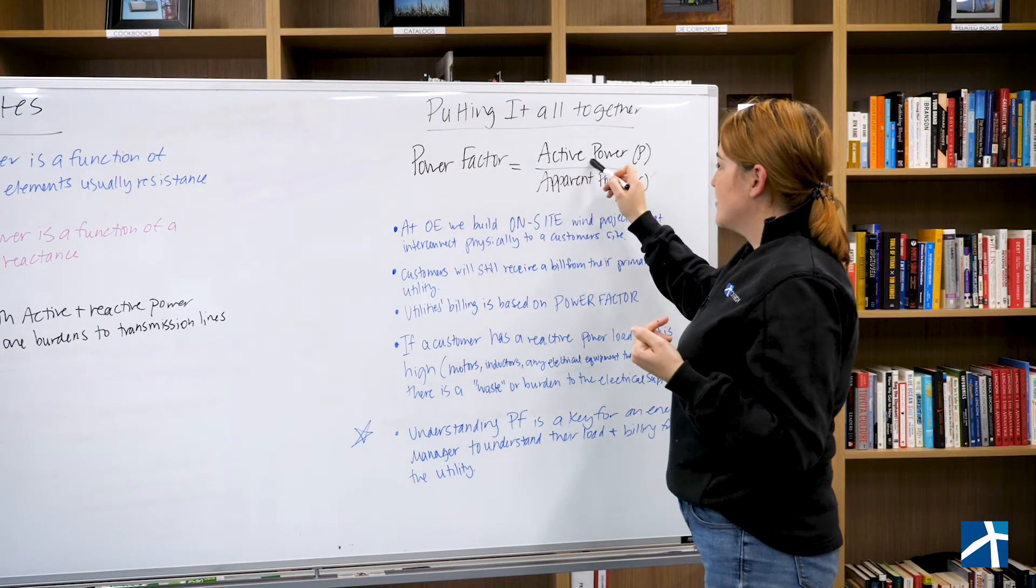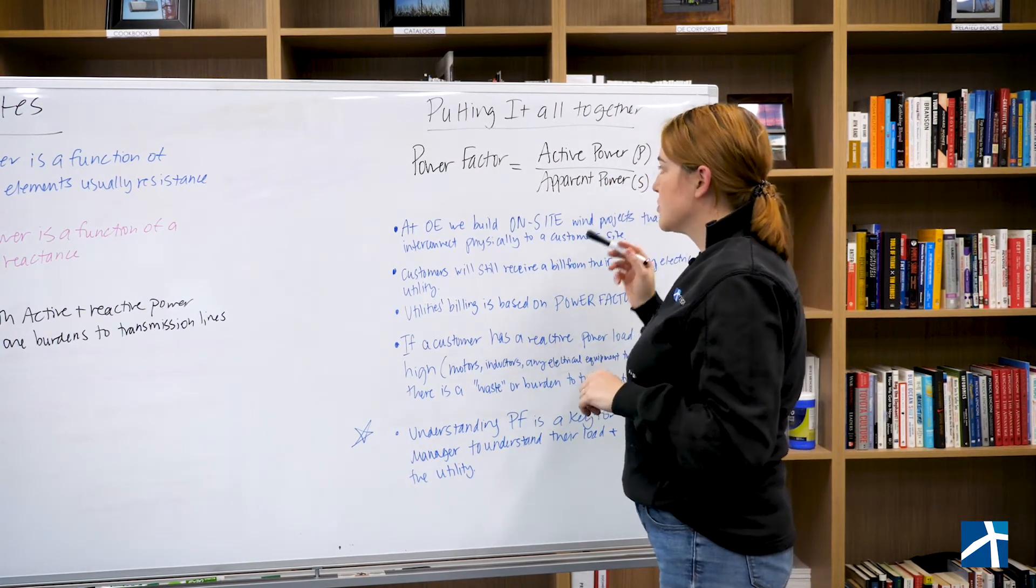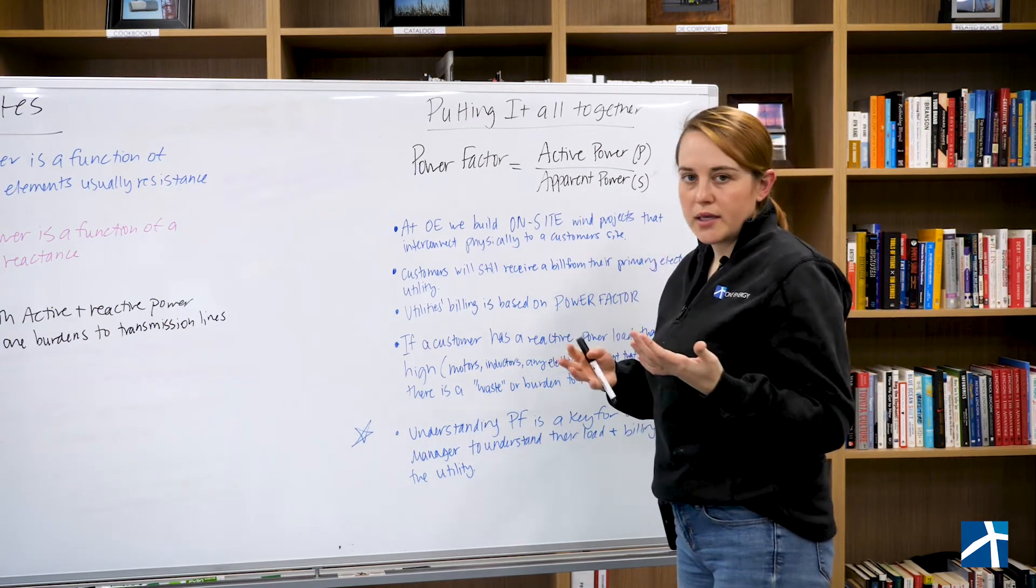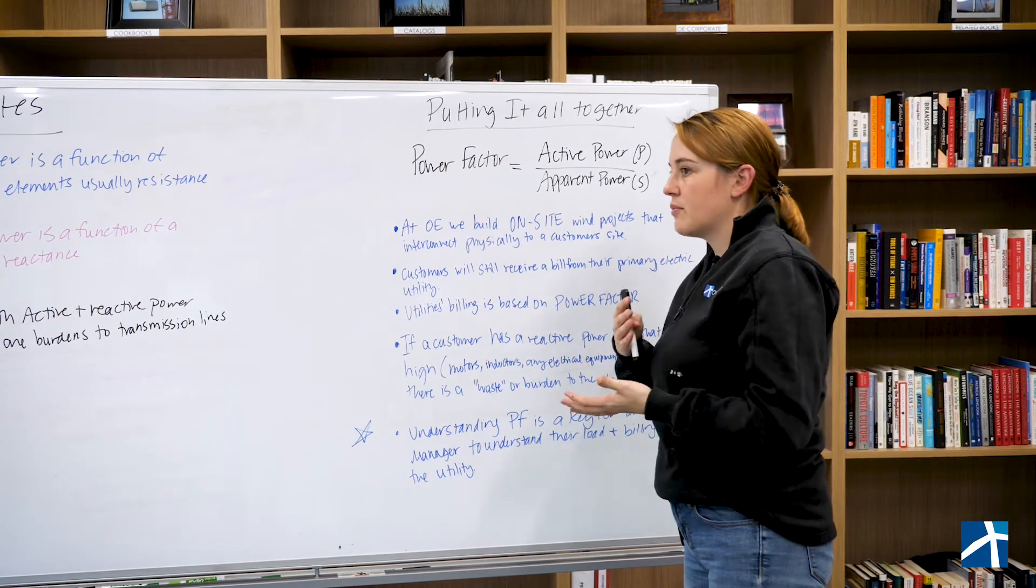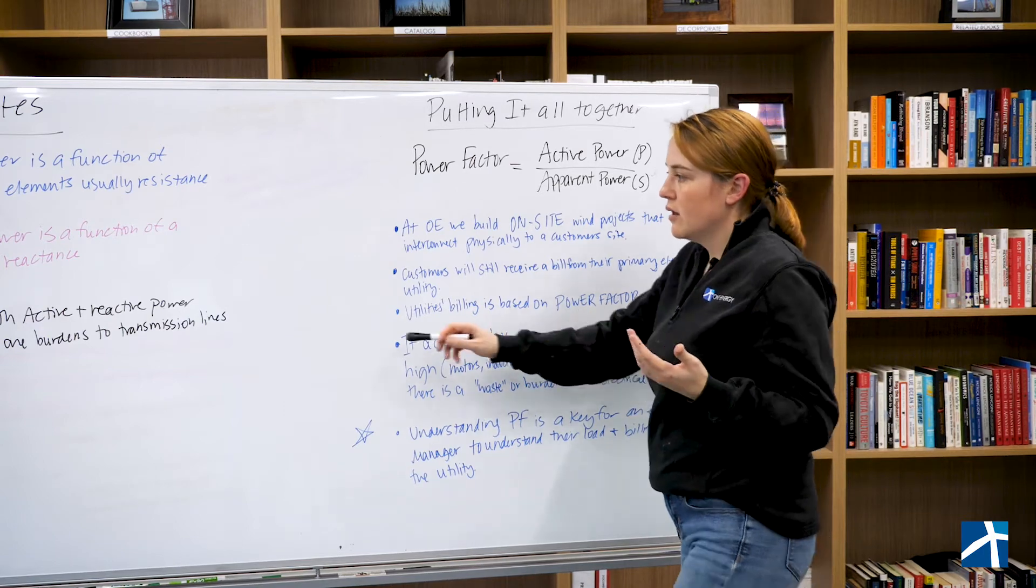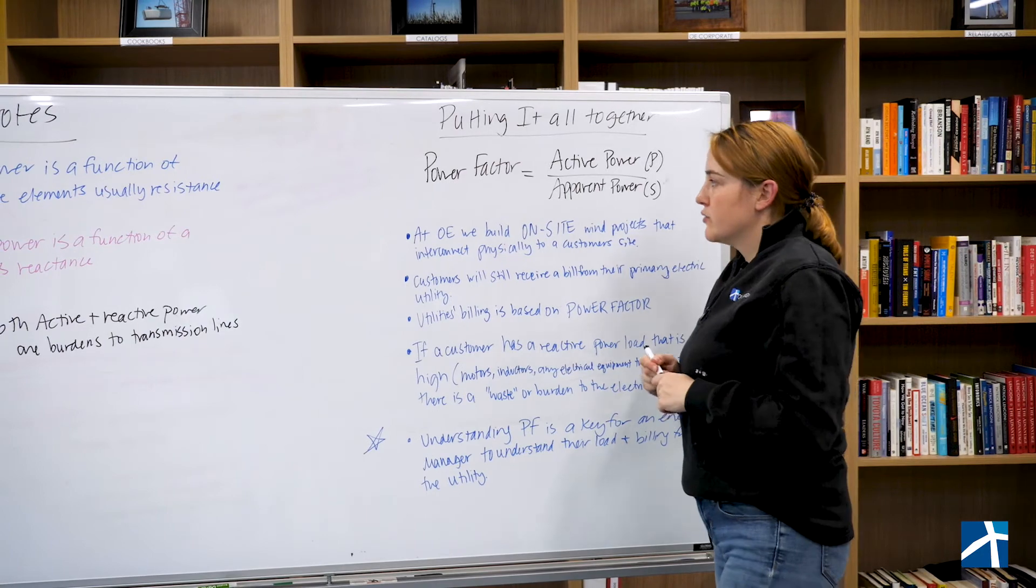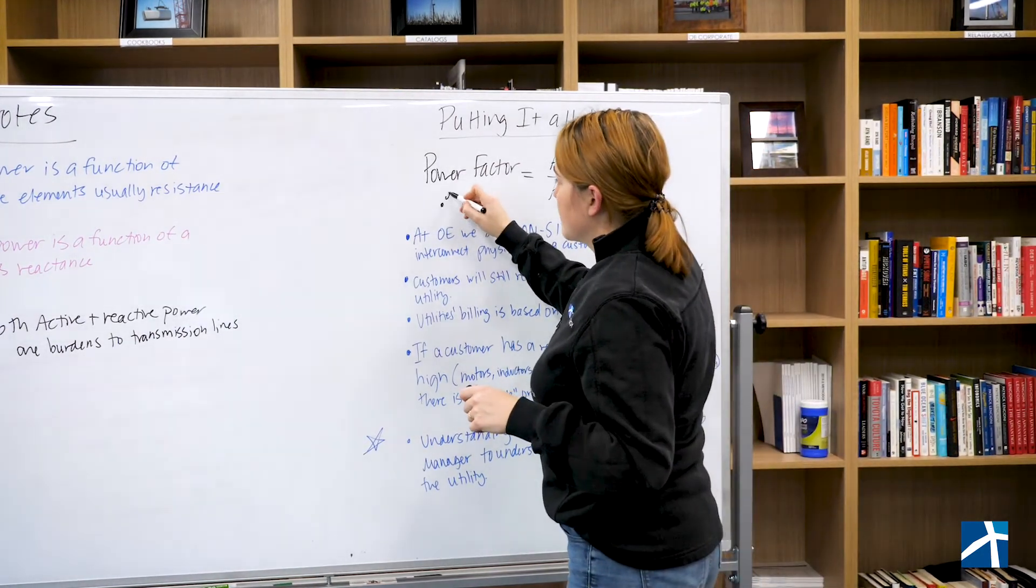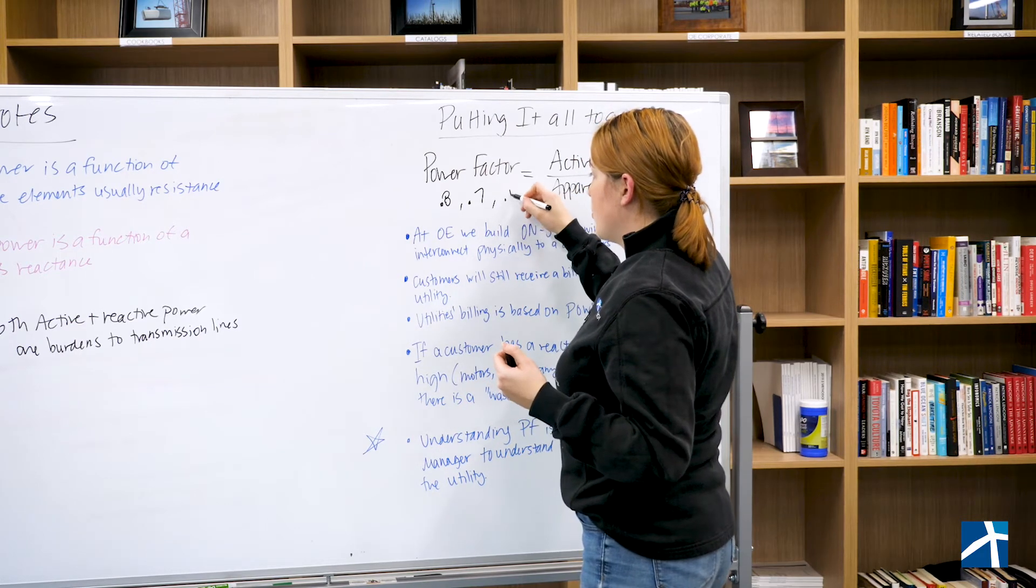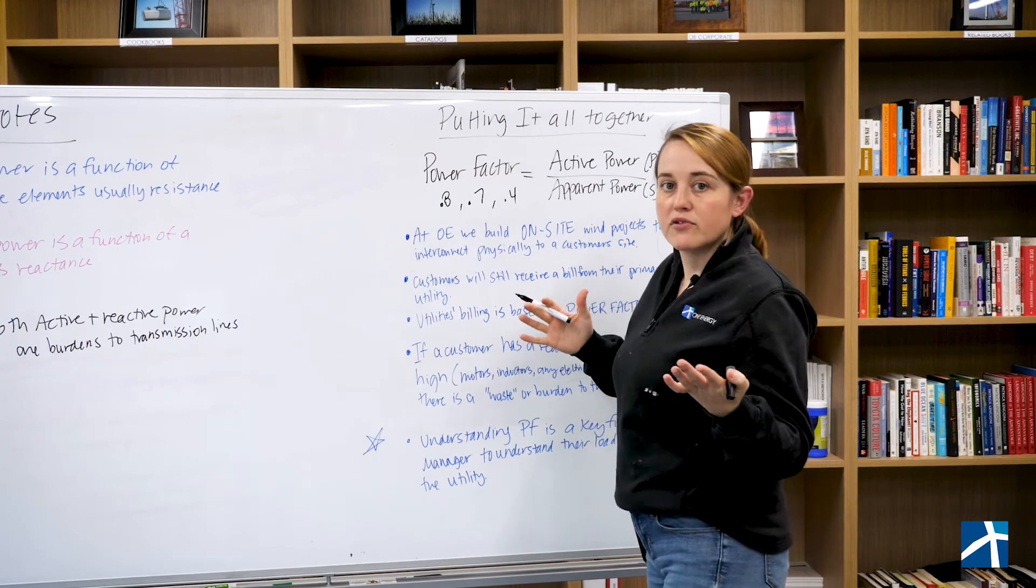The ratio of active power to apparent power is called your power factor. So this matters a lot when you're talking about utility billing. And so a utility is going to look at, let's say a plant's overall power factor, and they're going to say, okay, both active power and reactive power are burdens to the transmission line. So they're going to build differently as if this were 0.8, 0.7. They're going to build very differently if it's 0.4. It all depends on what's in the fine print of your utility bills.